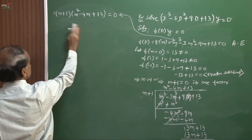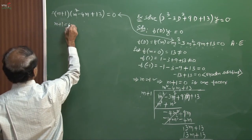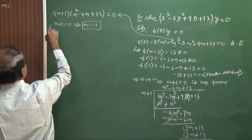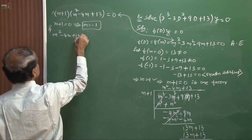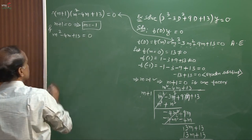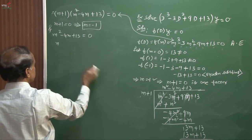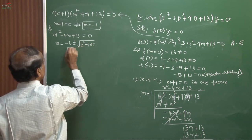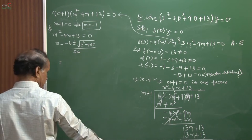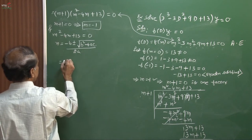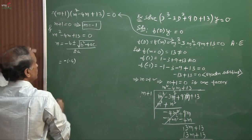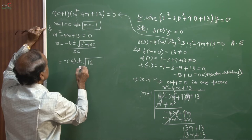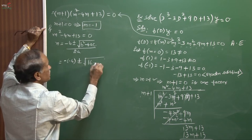From (m + 1) = 0: m = −1 is one real root. From the quadratic (m² − 4m + 13) = 0, factorization is not possible (13 is odd), so we use the quadratic formula: m = (−b ± √(b²−4ac))/(2a), where a = 1, b = −4, c = 13. So m = (4 ± √(16 − 52))/2.